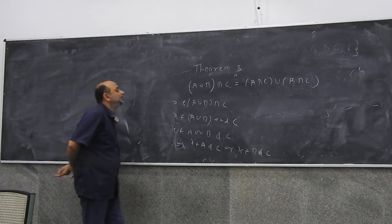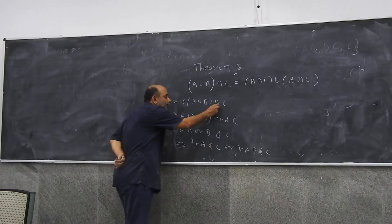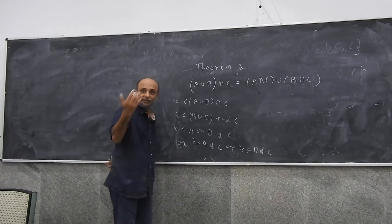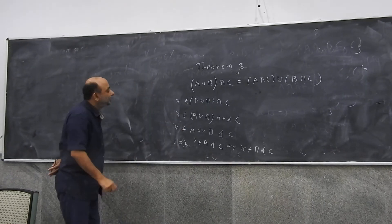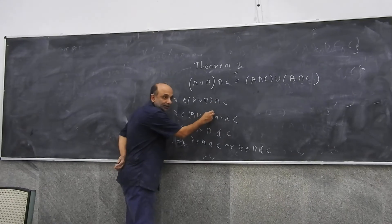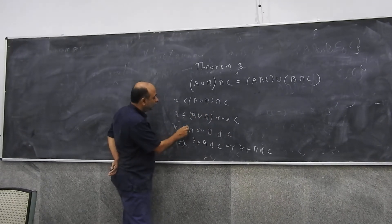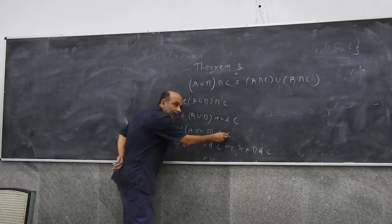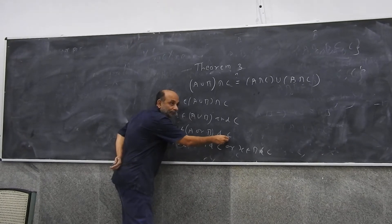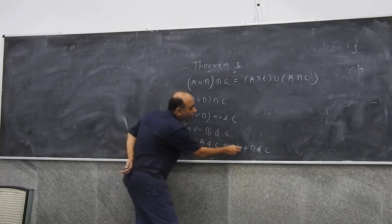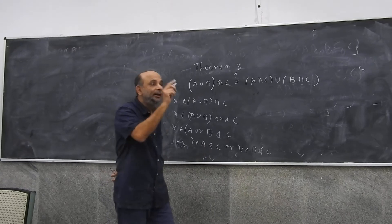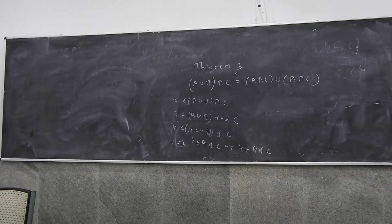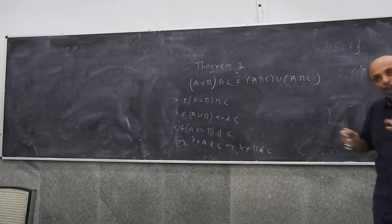If X belongs to A union B intersection C, this means X belongs to A union B and C. This statement means X belongs to A or B and C. Which means X belongs to either A and C or B and C. What is A and C? A intersection C. What is B and C? B intersection C. And what is the OR? The union. So A union B intersection C equals A intersection C union B intersection C.